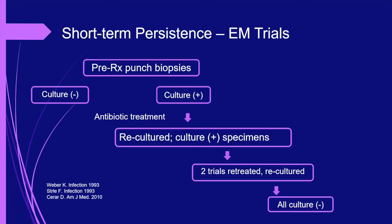This slide and the next review evidence from human trials. Three European studies demonstrated persistent B. burgdorferi infections in patients treated for erythema migrans. In these studies, pre-treatment punch biopsies taken from the leading edge of EM lesions were cultured for B. burgdorferi. Patients with positive cultures had a second punch biopsy taken after antibiotic therapy. In some of these patients, cultures were repeatedly positive. In both the Sterl and Weber trials, patients who remained culture-positive were re-treated and re-cultured; the third culture was negative for all patients.